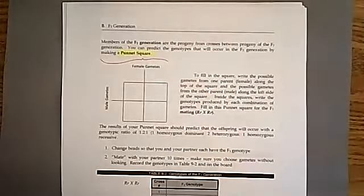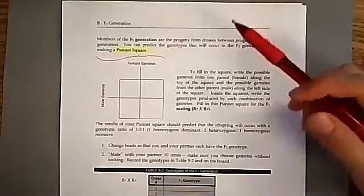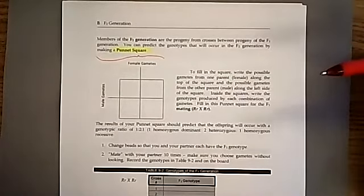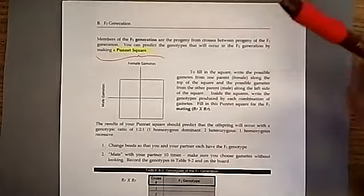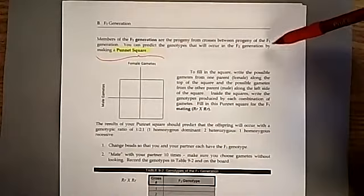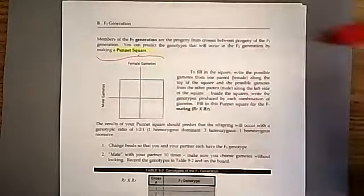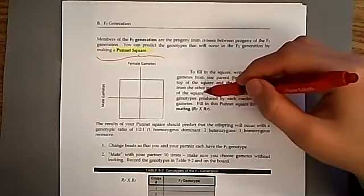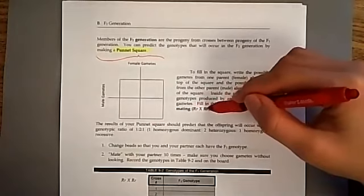Members of the F2 generation are the progeny from crosses between the progeny of the F1 generation — you take the F1 offspring, let them grow up, and mate them to each other. This happens a lot in plants since inbreeding doesn't have as many detrimental effects as in animals. You can predict the genotypes in the F2 generation by making a Punnett square. Usually we put the mom on the top and the dad on the side. Write the possible gametes from the female parent along the top and the male along the left side, then write the genotypes produced by each combination into the squares.